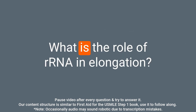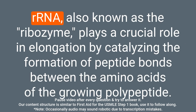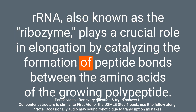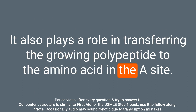Question: What is the role of rRNA in elongation? Answer: rRNA, also known as the ribozyme, plays a crucial role in elongation by catalyzing the formation of peptide bonds between the amino acids of the growing polypeptide. It also plays a role in transferring the growing polypeptide to the amino acid in the A site.